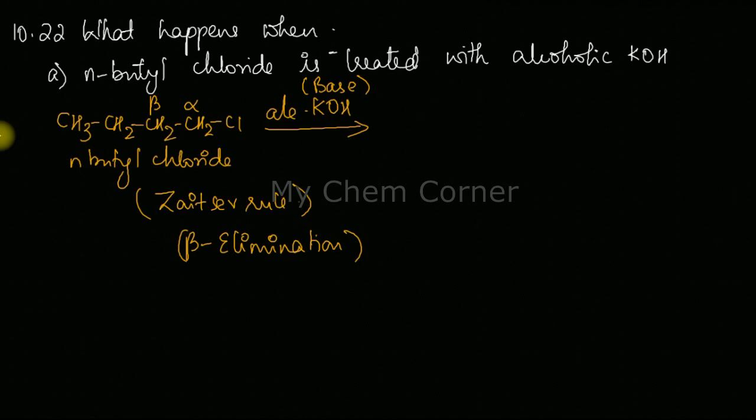case, since we have only one beta carbon, it's easy for us to extract the hydrogen from there. The halogen will also move out. Between carbon number one and carbon number two, you're going to form an alkene, so here